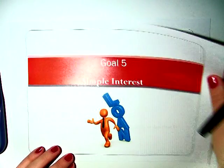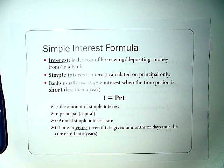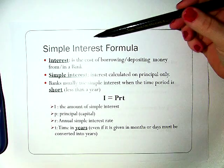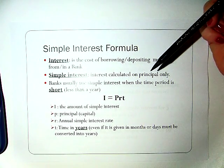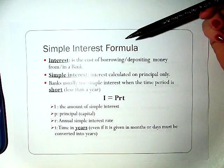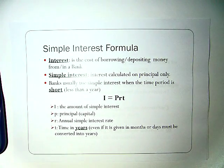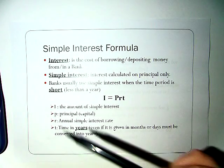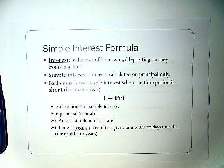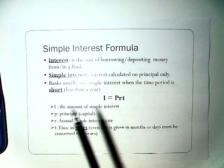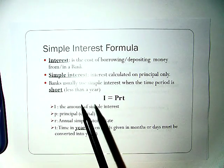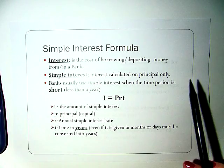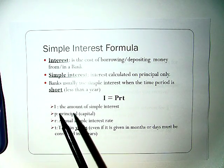So let's talk a little bit about what exactly interest is. Interest is the cost of borrowing or depositing money from or to a bank. Now there are different forms of interest, simple and compound, but we're going to focus on simple interest. Simple interest is calculated only on the principal, only on the amount that you actually borrow or deposit.